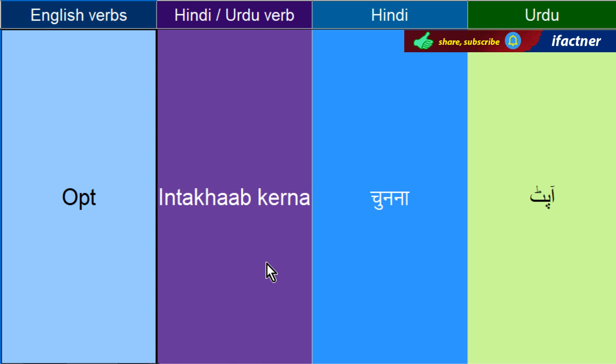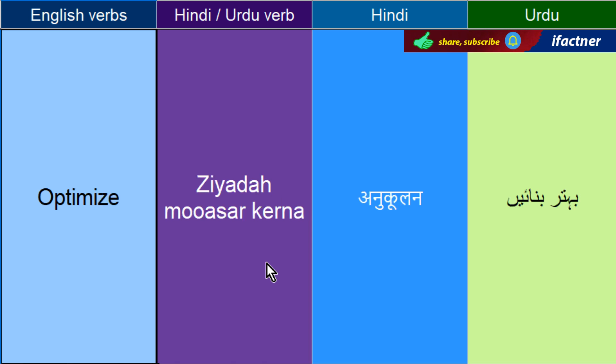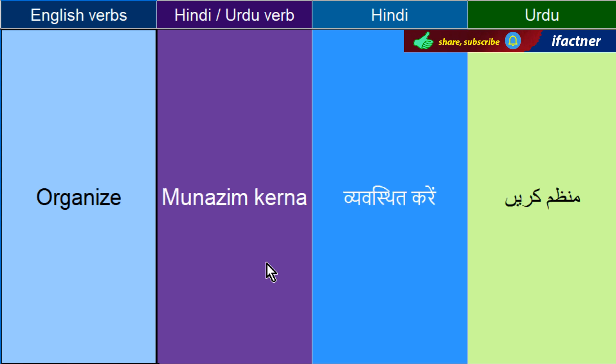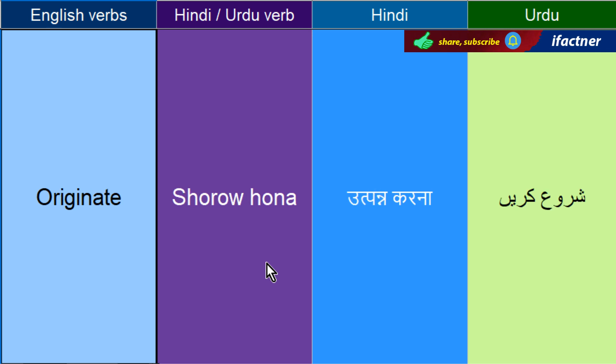Opt in ka madlab hai ki haan mein is ka intekhaab kerthay hain, opt out hothay hain nahin ya chhoor do. Ziyadha mausir kerne ko, behter banane ko kehthay hain — Optimize. Let's optimize this machine. Terteeb dayne ko kehthay hain — Order. Ya hukam dayne ko bhi order kaha jaata hai. Munnazim kerne ko kehengay — Organize. Let's organize a rally. Shuru hoona — Originate.